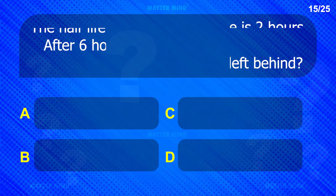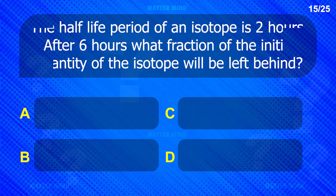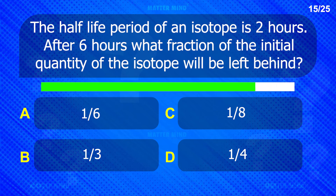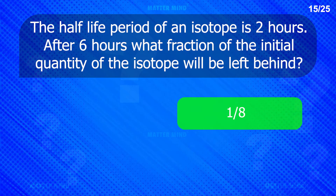The half-life period of an isotope is two hours. After six hours, what fraction of the initial quantity of the isotope will be left behind? Answer: one-eighth.